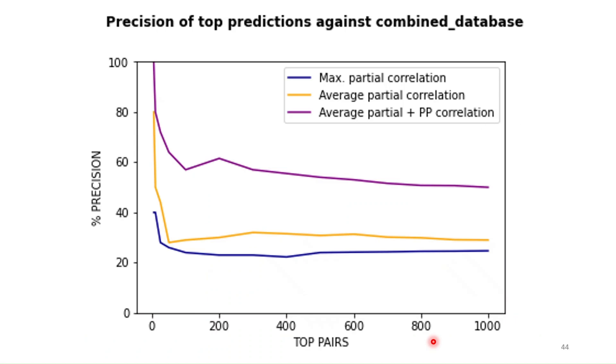So we calculated the precision for this ranking system which is shown here as purple and you can see how our top scoring predictions which are the ones that we are most confident about are actually true positives so they are present in the databases, and as we move down the list the precision decreases which is what we expected.